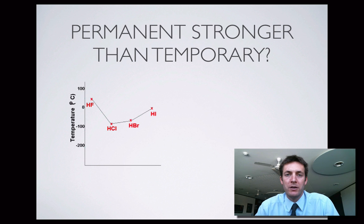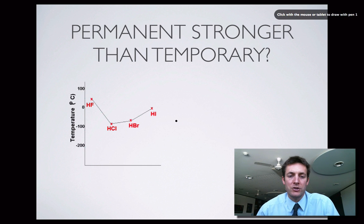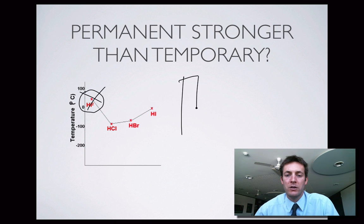So should a permanent dipole be stronger than a temporary one? Well, if we just ignore HF on this graph for now, because we haven't done hydrogen bonding yet, and it'd be better to study hydrogen bonds before we try and explain why there's this quirk at the start of the group. This is group seven. So we're looking down the halogens. We're starting with fluorine, but we're ignoring that one. And then we're going down to chlorine, bromine and iodine.